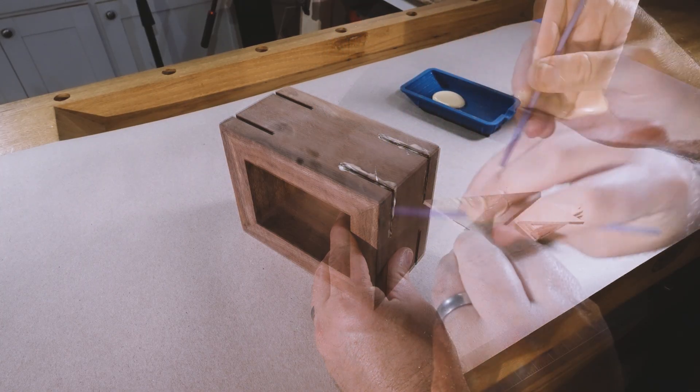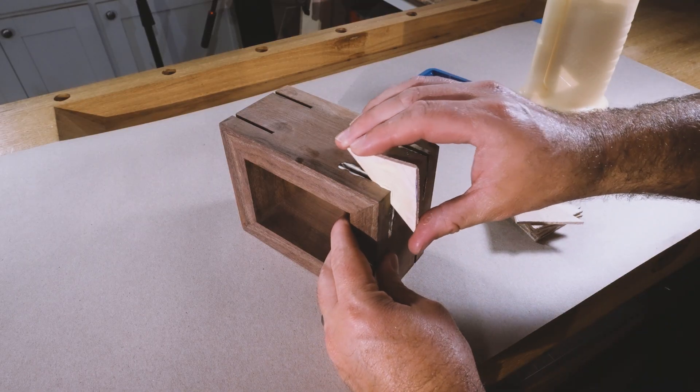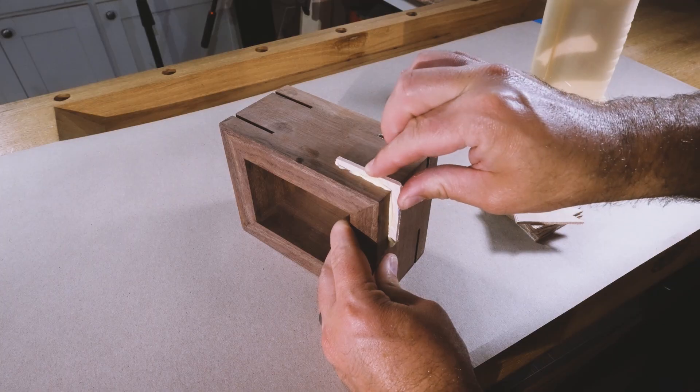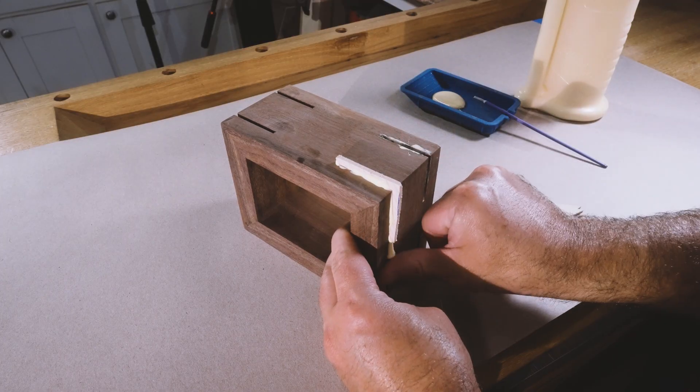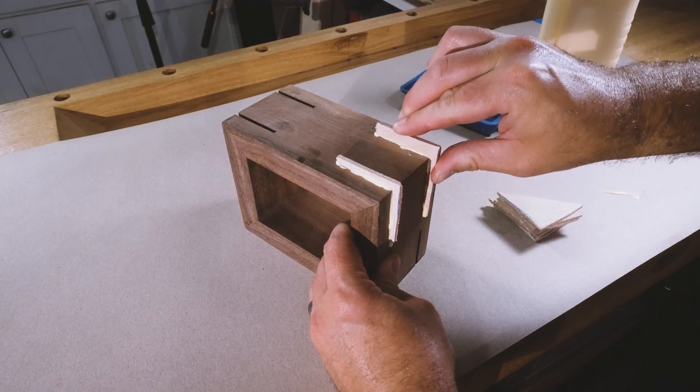Now it's time to add the keys. These contrasting maple keys will add strength to the joint as well as some visual interest. I'm not worried about glue squeeze out because the sides of the box will be sanded flat later.